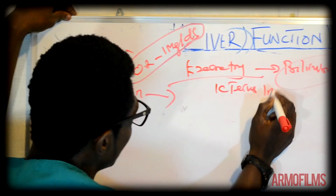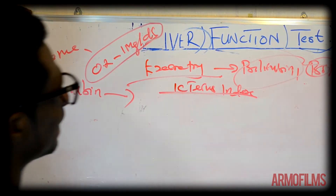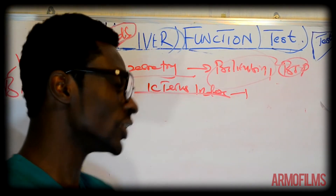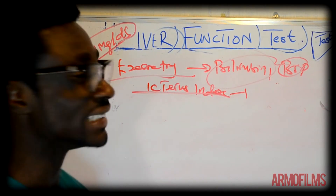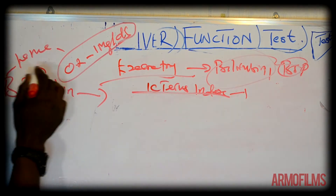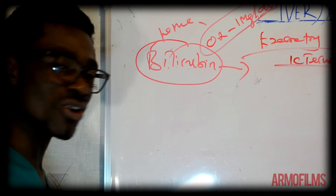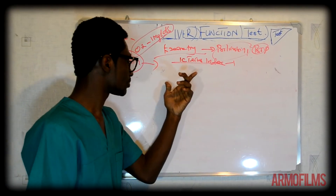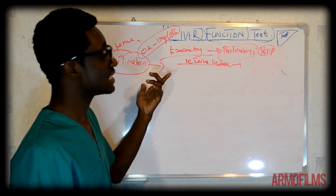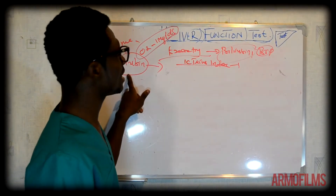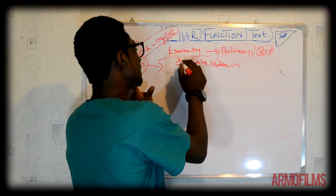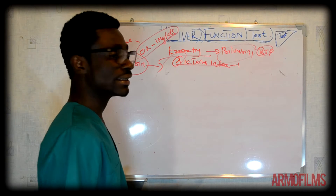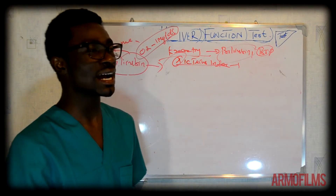The icterus index is a way of measuring the level of skin discoloration as a result of the accumulation of bilirubin in the blood. It is a way of determining if there is an increase in serum bilirubin. However, this test is actually outdated and not widely used anymore.